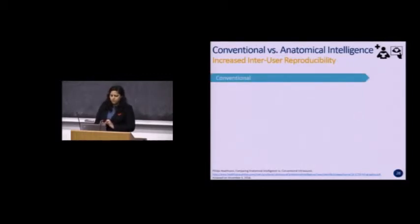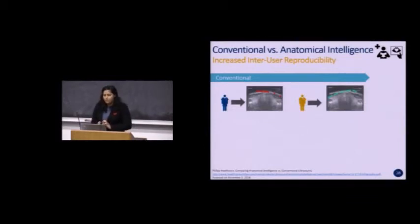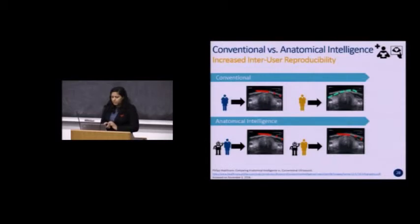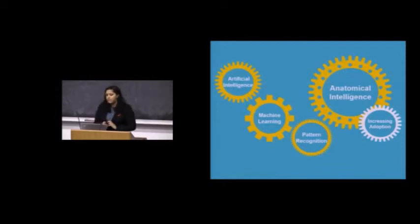Another advantage of an anatomically intelligent ultrasound system is that it increases inter-user reproducibility. With a conventional system, two different users might acquire slightly different images. After acquiring images, they make manual calculations that are presented to the radiologist for diagnosis, and those tiny differences can affect the kind of diagnosis the radiologist comes up with. However, with an anatomically intelligent system, you can reduce variation between images acquired by two different users. Because of its auto-scan feature and ability to automatically perform measurements, the system can increase diagnostic certainty.